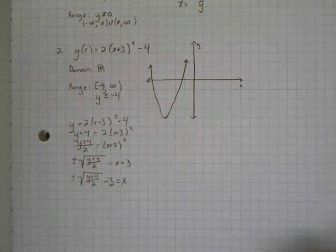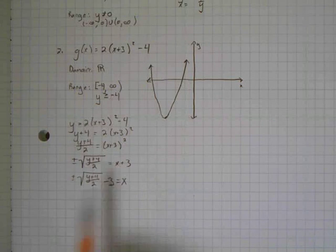And then finally you've got to subtract 3. Okay, and we end up with that: x equals plus or minus the square root of (y plus 4) divided by 2, minus 3.